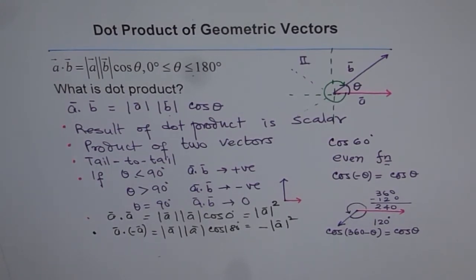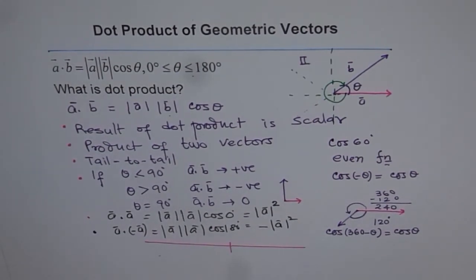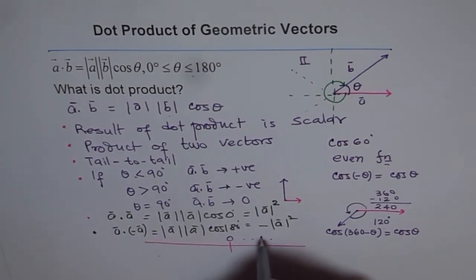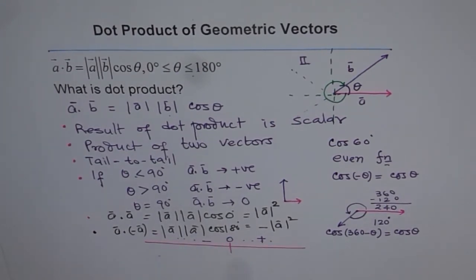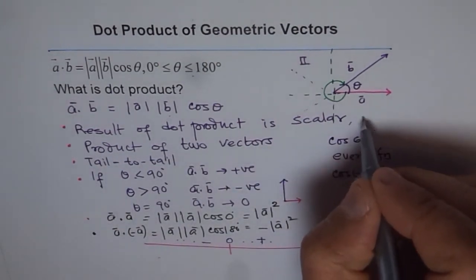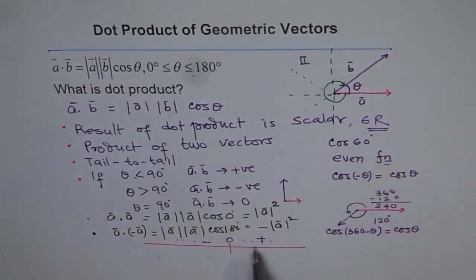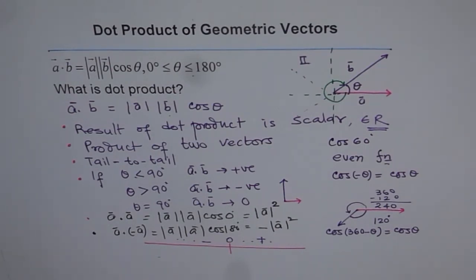Getting a negative result from dot product does not make it a vector. Think of a number line — it has zero in the middle, positive values on one side and negative values on the other, but all are real numbers, all scalars. Dot product results are always scalars — members of the set of real numbers — which can be positive or negative. Don't confuse a negative answer with a vector or direction. That is a critical point to understand about dot products.